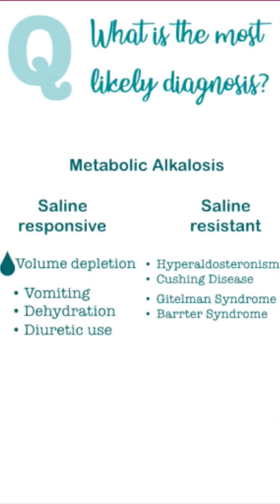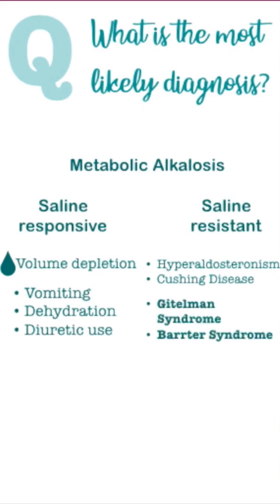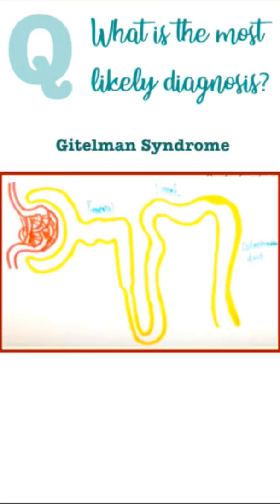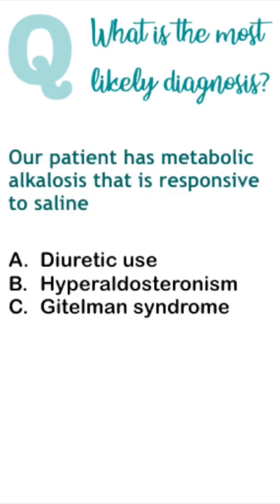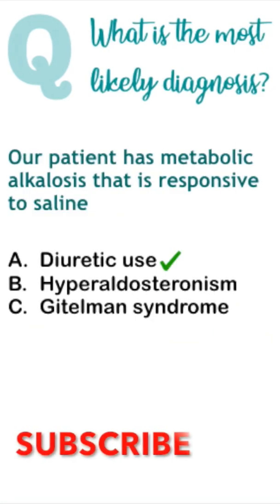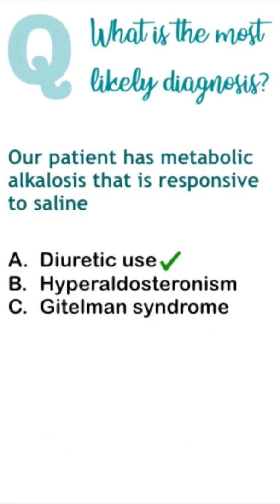Although Gitelman syndrome has an effect similar to diuretics, it isn't saline responsive because the issue is with the kidney. So even if we provide saline, the kidney will not respond and hence metabolic alkalosis will not be corrected. So the correct answer is diuretic use.